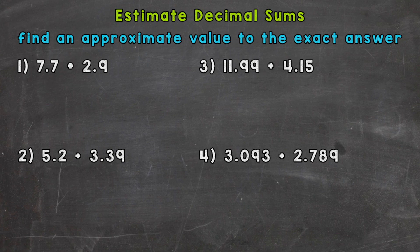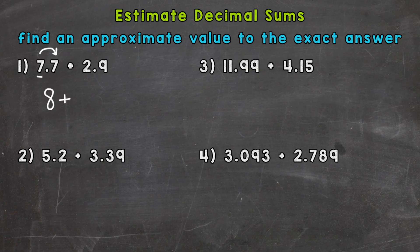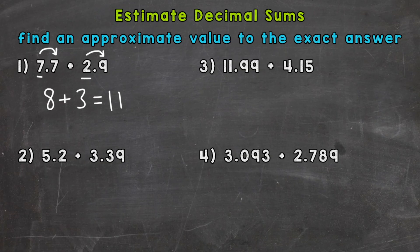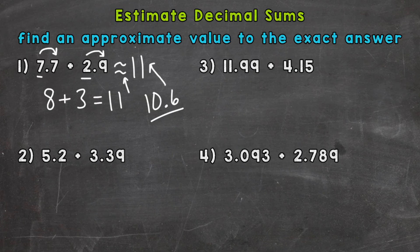Number 1: we have 7 and 7 tenths plus 2 and 9 tenths. The first thing we want to do is round each of these decimals to the nearest whole number, which is the ones place. We underline the digit in the ones place and look next door. 7 and 7 tenths rounds to 8 — it's closer to 8 than to 7. 2 and 9 tenths — that 9 tells us to round up to 3, so it's closer to 3 than to 2. 8 plus 3 equals 11, and that's our estimate. So 7 and 7 tenths plus 2 and 9 tenths is approximately 11. The exact answer is 10 and 6 tenths, so we have an approximate value to the exact answer.